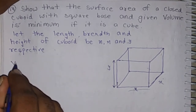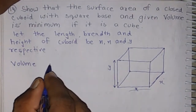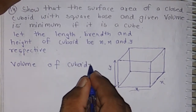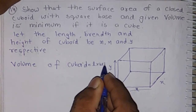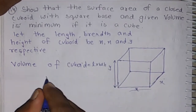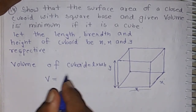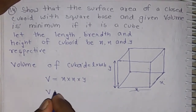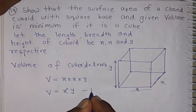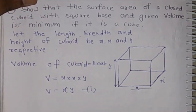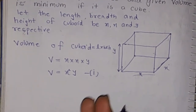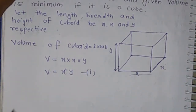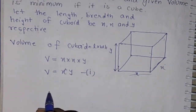Volume of cuboid is length into breadth into height. Volume V is constant and given. L into B is x into x, height is y, so V equals x squared y. This equation is used for changing the variable — finding the value of y in terms of x. Now we have to find the surface area.